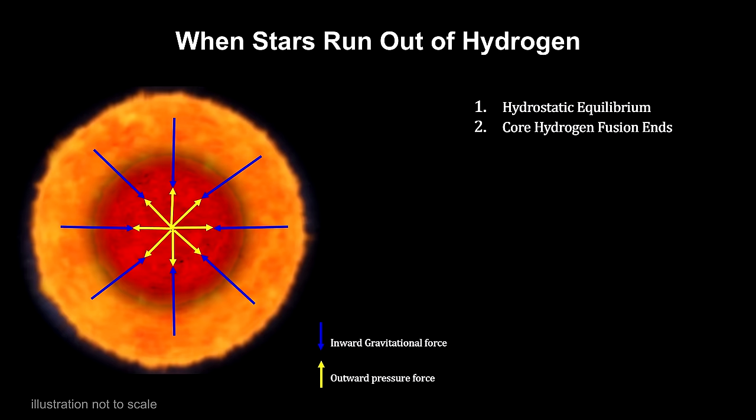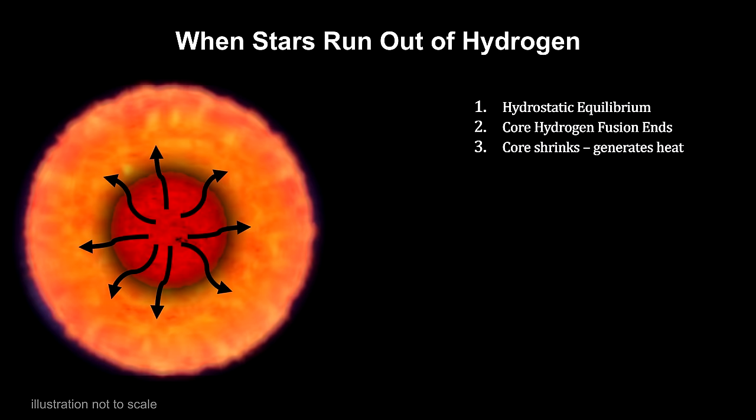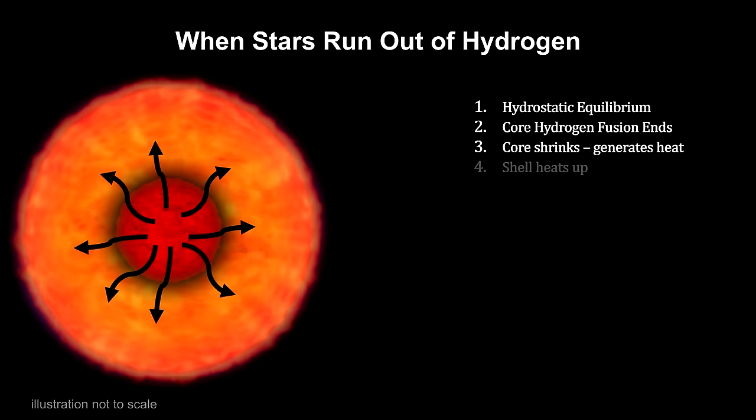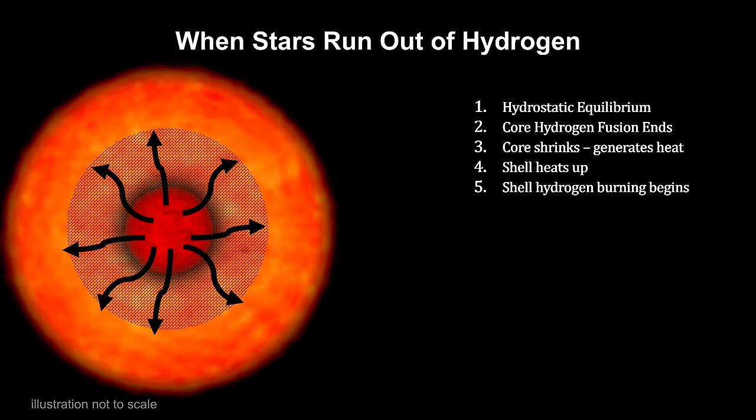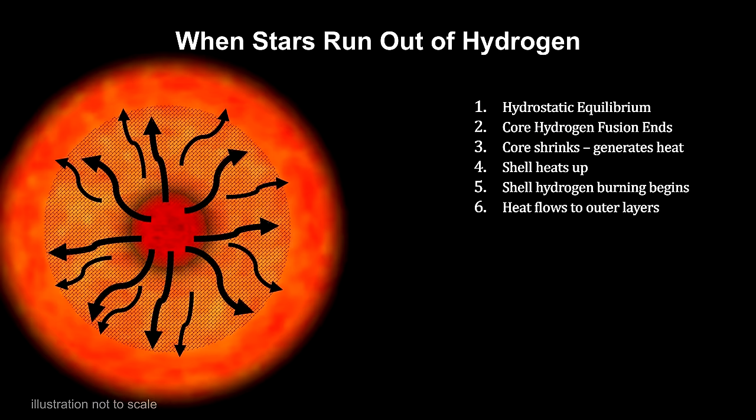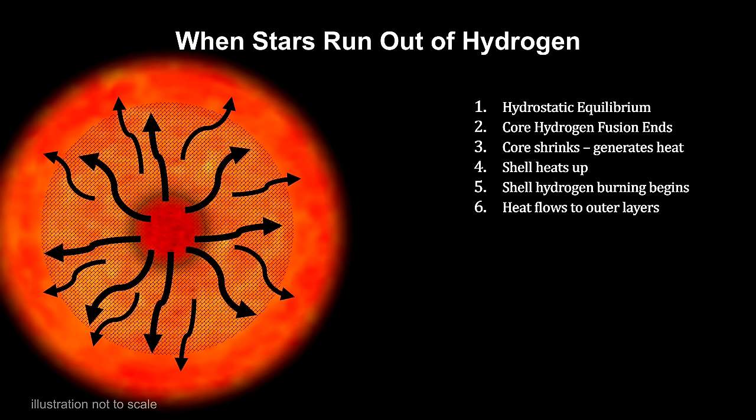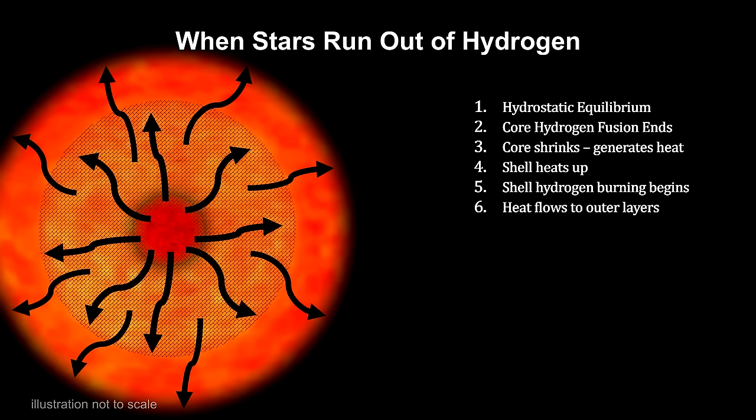Gravity again takes over, and the core begins to contract. As the star's core shrinks, the energy of the inward falling material is converted to heat. The heat flows outward to cooler regions. The added heat raises the temperature of the layer of hydrogen just outside the core. Once this shell becomes hot enough, hydrogen fusion begins there. The helium core continues to contract, producing more heat all around it. This leads to more fusion in additional shells of fresh hydrogen outside the core. The additional fusion produces still more energy, which also flows out into the upper layers of the star.